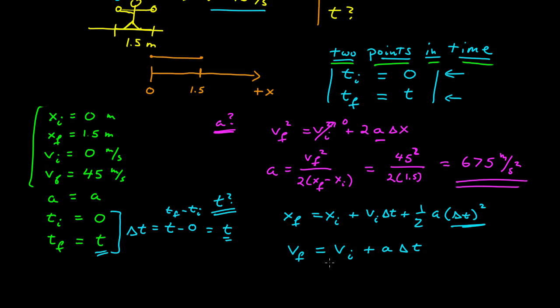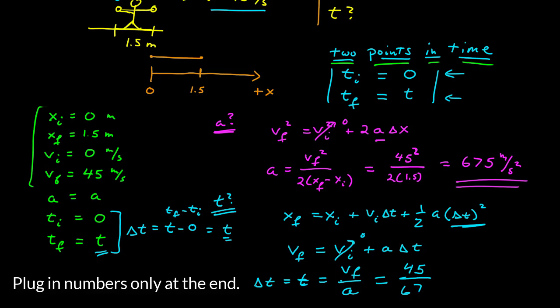Now that I know the acceleration, I know final and initial velocity, I can do this as well. Delta t, which is equal to t, then is equal to the final velocity divided by the acceleration, which is 45 divided by 675, and that is equal to 1/15th seconds.